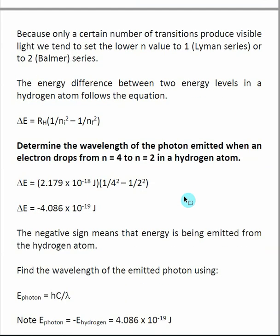There are two main ways to apply this equation: the hydrogen atom is either absorbing or giving off a photon. For the first example, our electron in a hydrogen atom starts at n=4 and drops to n=2. We want to find the wavelength of the emitted photon. This is a two-step process: first, find the energy of the emitted photon using the transition equation, then use the relationship between energy and wavelength to find the wavelength.